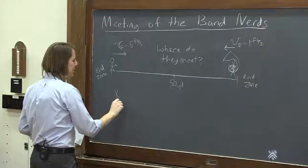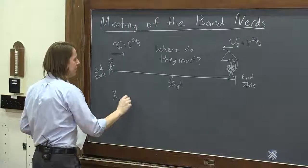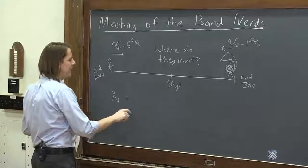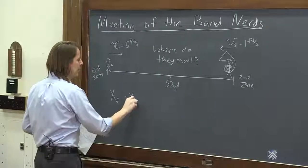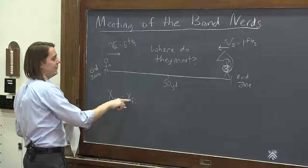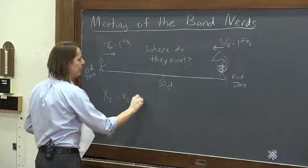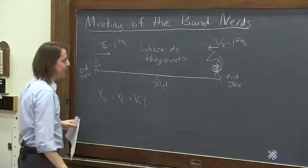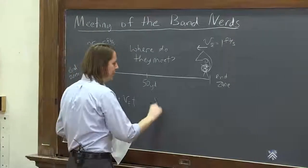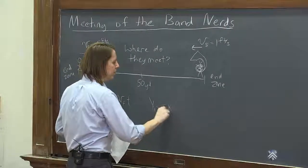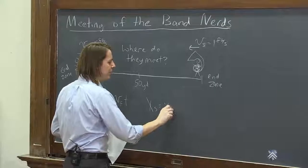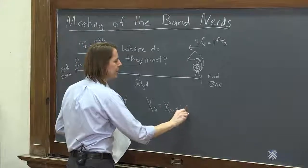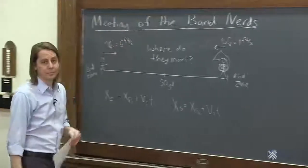So the one you want is that the x final, or the position of the fast person, equals their xfi, the fast person's initial position, plus their velocity of the fast person times time. And then the slow person, x slow equals x slow i, wherever they started, plus their velocity times time.